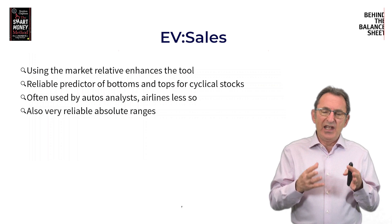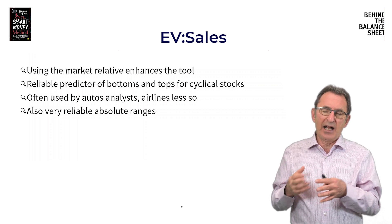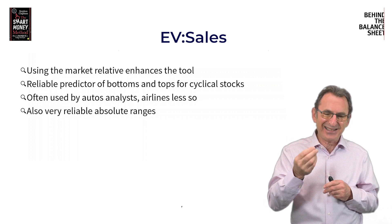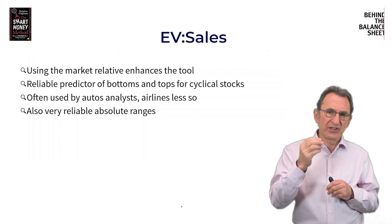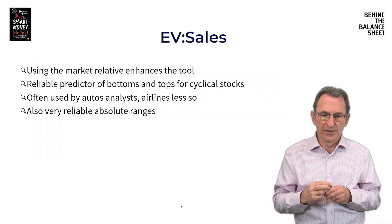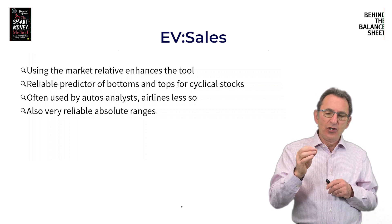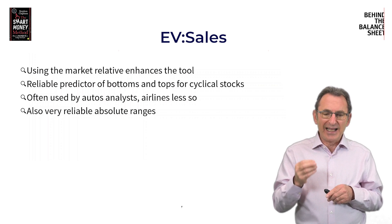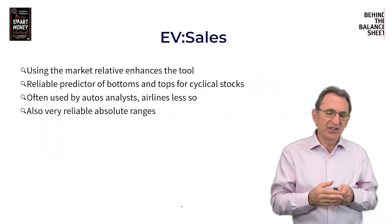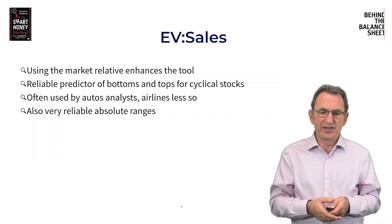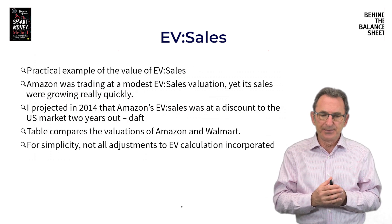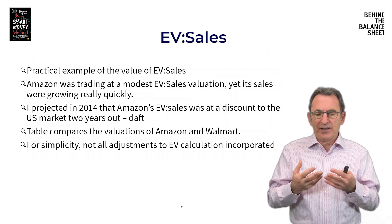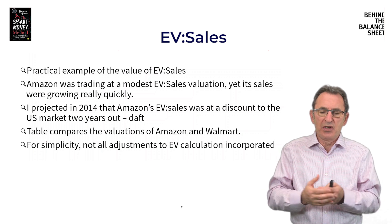If you use EV to sales relative to the market, I find that really enhances the tool, because it's been a fantastically reliable predictor of both tops and bottoms for cyclical stocks. It's often used by automotive analysts and airline analysts, though less so. The absolute ranges for EV to sales are pretty reliable for those industries, much more so than earnings-based measures. Let me give you a practical example of how you can use it.